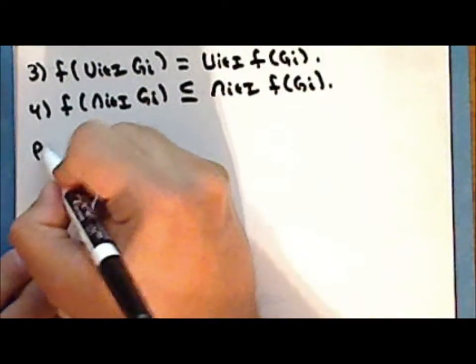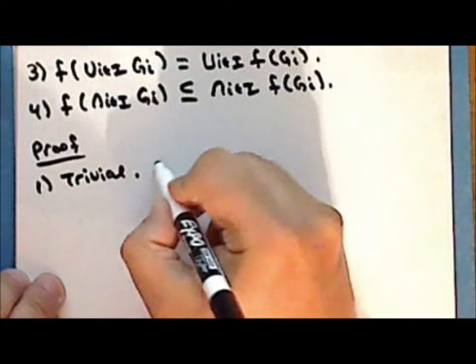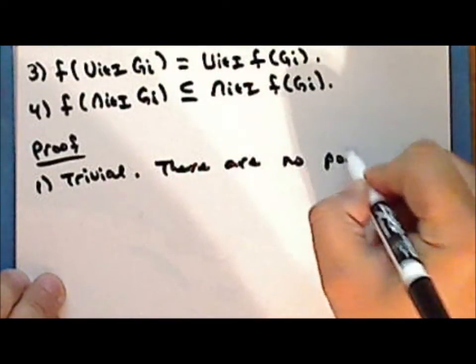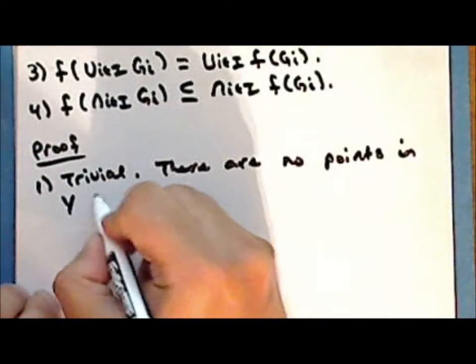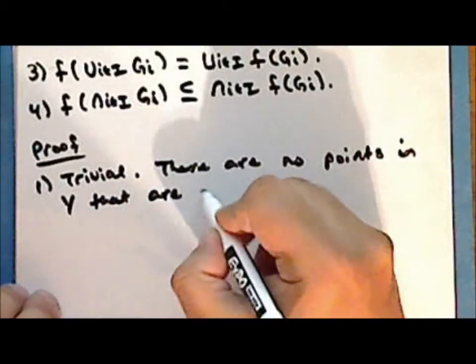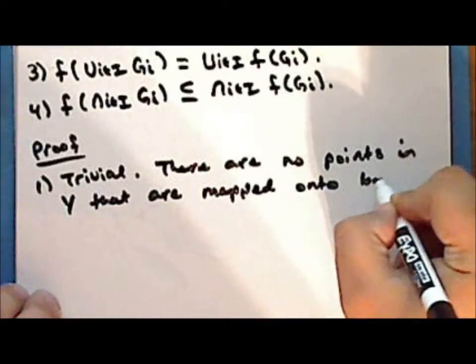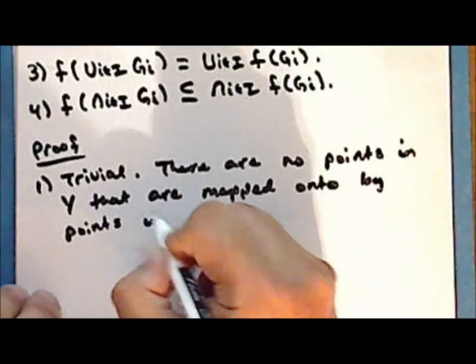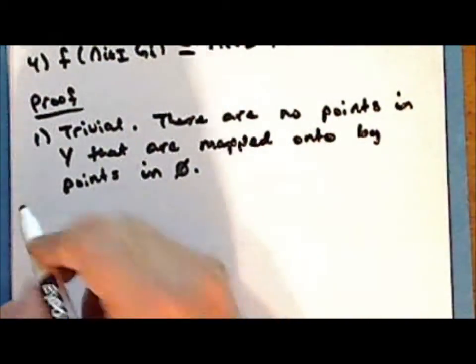Proof. First statement: the proof is trivial. There are no points in the codomain y that are mapped onto by points in the empty set.